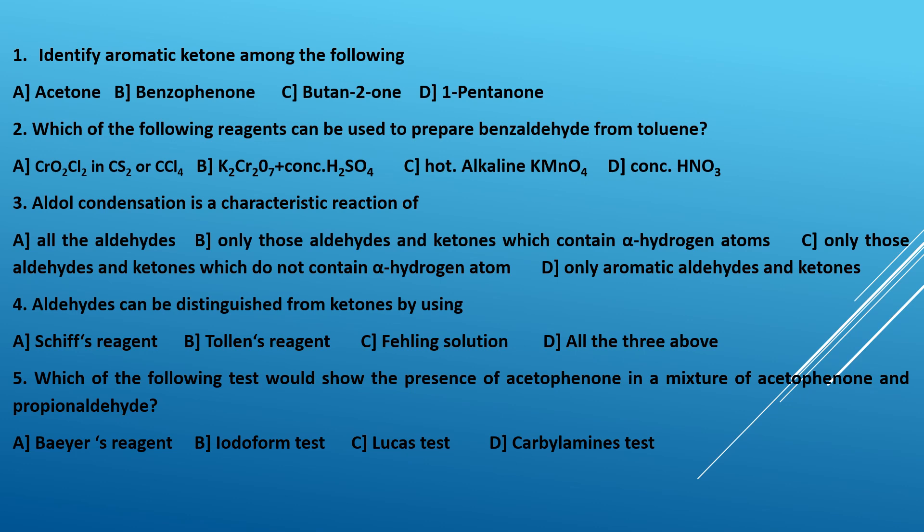Fourth question: aldehydes can be distinguished from ketones using — A, Schiff's reagent; B, Tollens' reagent; C, Fehling's solution; D, all the above three. All three reagents can be used to distinguish aldehydes from ketones, so D is the correct answer.